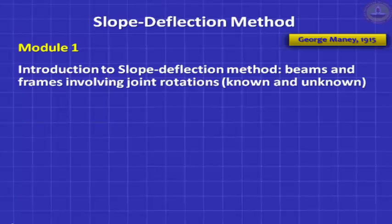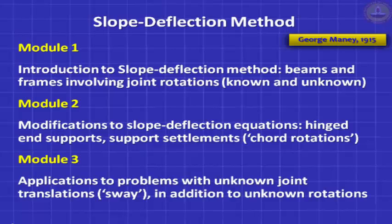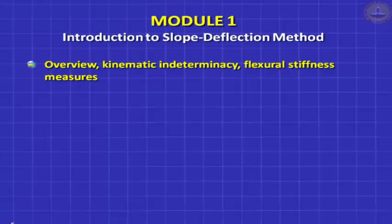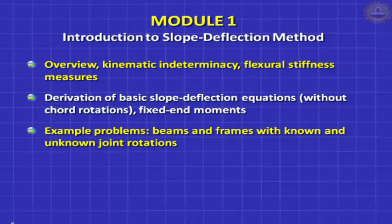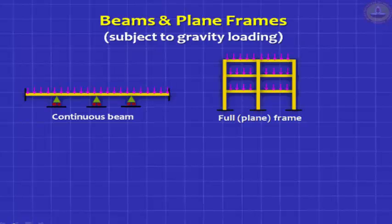We do not deal with translations, support settlements — all that we will do in module 2. In module 2, we look at modifications to this method where we can reduce the degree of kinematic indeterminacy, especially when we have hinged supports. We will also look at known support settlements. In module 3, we cover all the other kinds of problems — applications to problems with unknown joint translations known as sway degrees of freedom, in addition to unknown rotations. So let us begin with a broad overview.